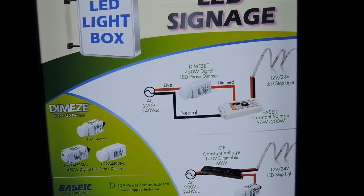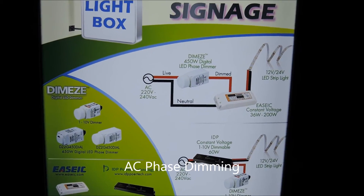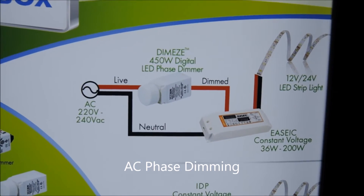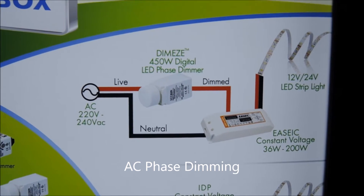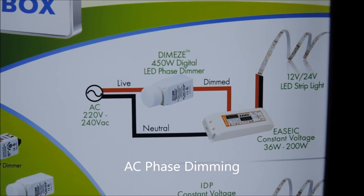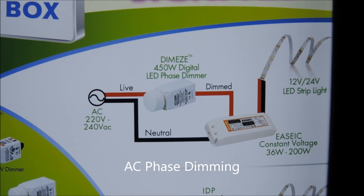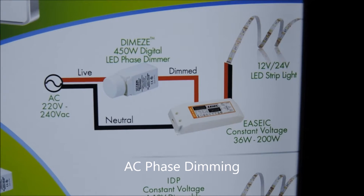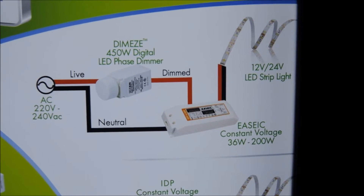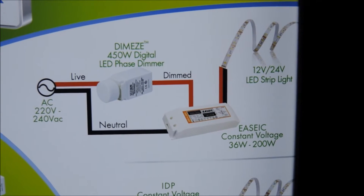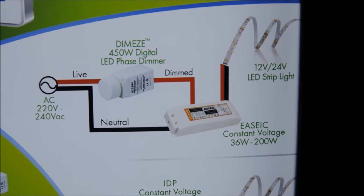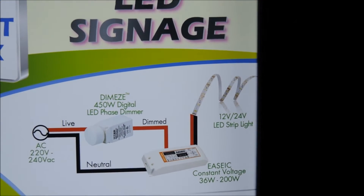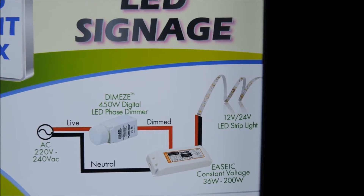Under the solution, we actually have two approaches. For the high voltage approach, we have the AC source that connects directly to the DimEasy 450W digital LED phase dimmer, which further controls the EZIC constant voltage LED driver from 36W to 200W, and that outputs to the 12V and 24V LED strips.